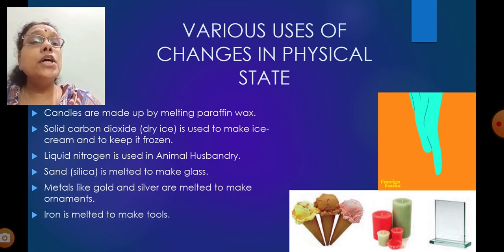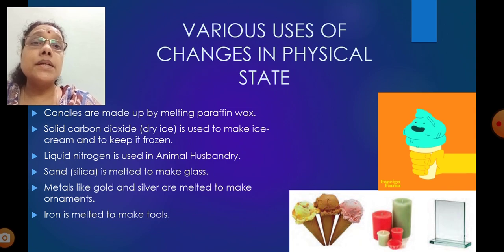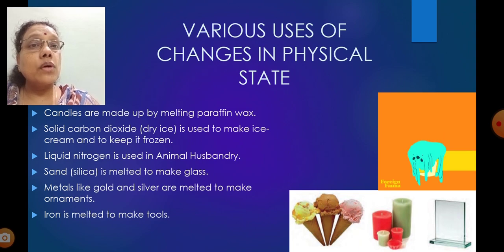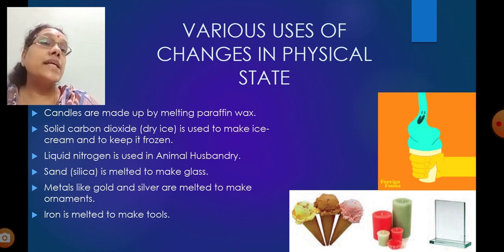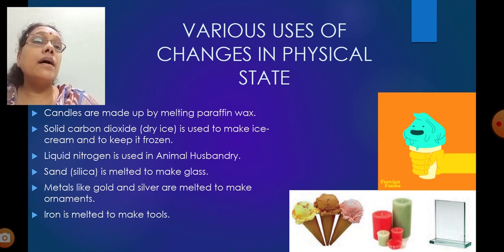Iron is melted to make tools. Yes, we require tools in different fields, in industry. Near home also, in the kitchen, we are using iron, this knife for cutting the vegetables. So that is also how they are making the knife, melting the iron pieces or iron metal in different shapes. That is about the uses of this. And carbon dioxide, another name for solid carbon dioxide is dry ice.